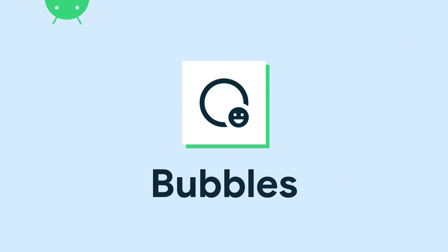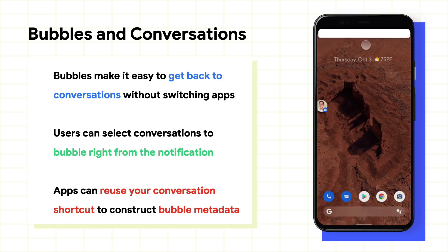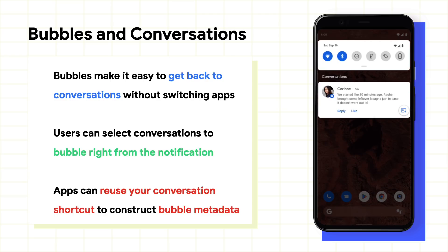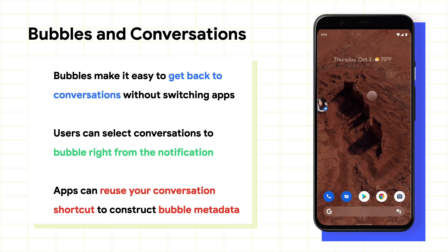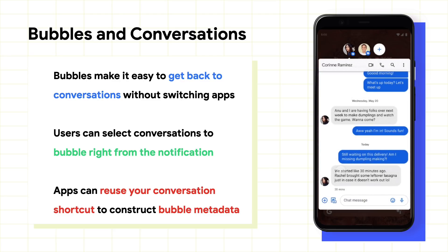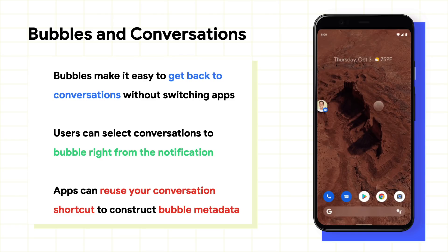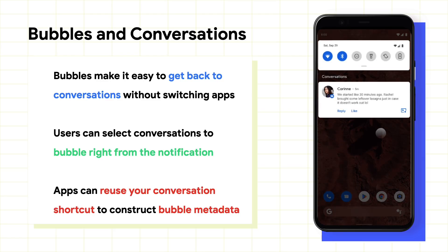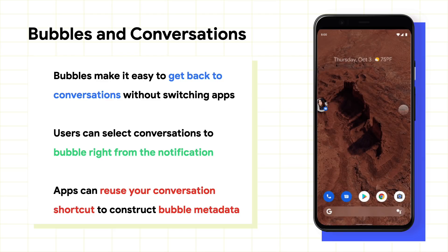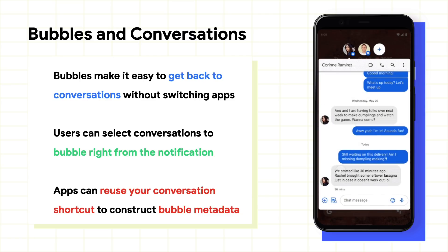Now let's talk about bubbles. Bubbles allow you to chat while multitasking — they float over whatever you are currently doing on the phone. When you tap on a bubble, a floating conversation window will appear so you can see and respond in the chat. You can go back to what you were previously doing by collapsing outside of the bubble. This makes it really easy to get back to chats without having to open or switch apps. In Android 11, users can create a bubble by tapping on the button on the notification. Developers can reuse the conversation shortcut intent to create bubble metadata.